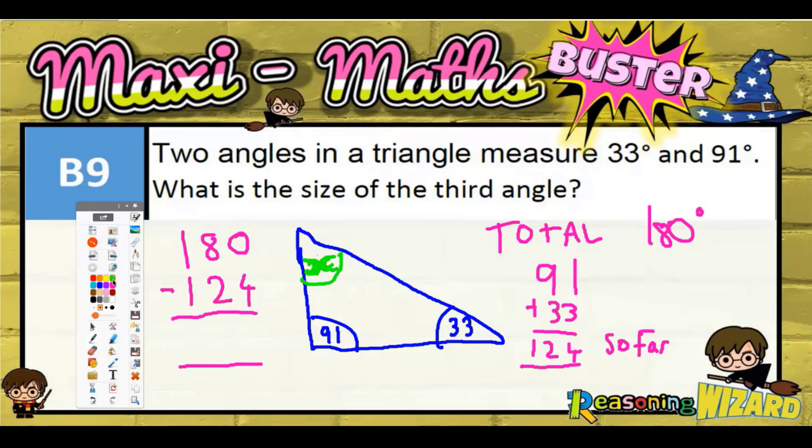So 0 take away 4, we can't do. More on the floor, borrow from next door. Borrow from the 8, it becomes 7, and the one we borrow makes that to 10. 10 take away 4 is 6, 7 take away 2 is 5.